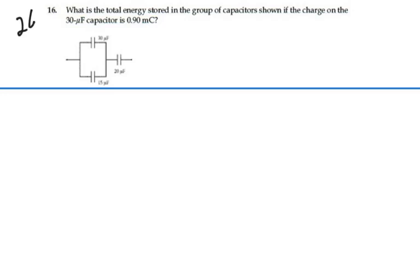Here's problem 2616. What is the total energy stored in the group of capacitors shown if the charge on the 30 microfarad capacitor is 0.9 millicoulombs? We can calculate the energy stored on the 30 microfarad capacitor right now, but we want to find the energy stored on the other two as well. So let's approach this by finding the energy stored on the equivalent capacitance for the whole network.